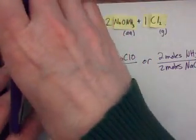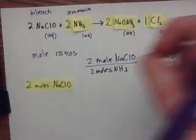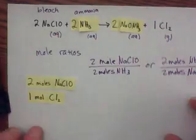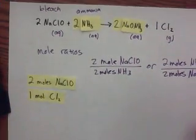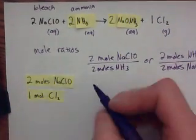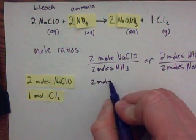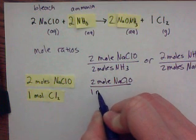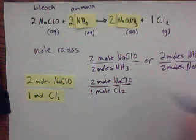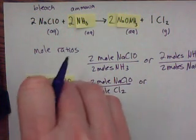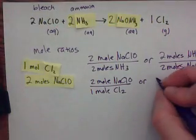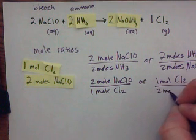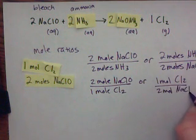If they ask about bleach and want to know how much chlorine gas would be produced, you pull the two things you want and make a ratio. In this case, it's two moles of sodium hypochlorite to one mole of chlorine gas. Or the reciprocal: one mole of Cl2 over two moles of NaClO.